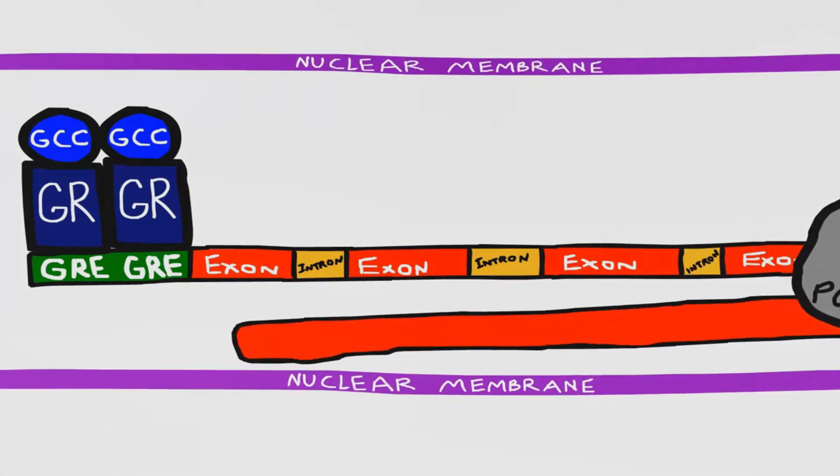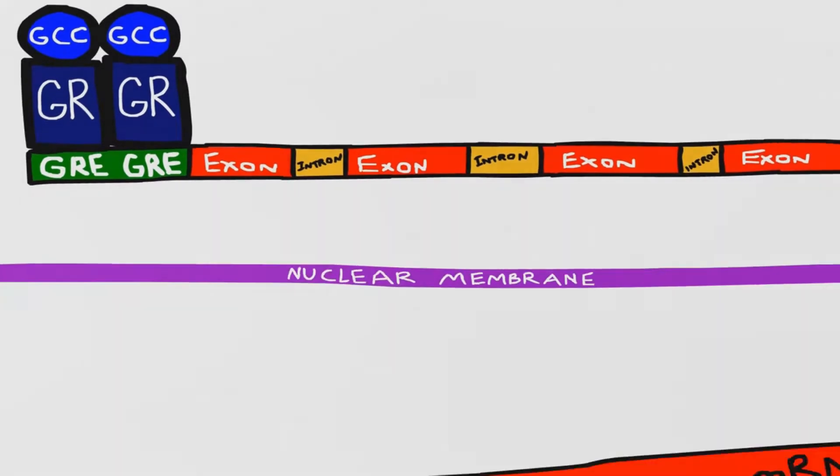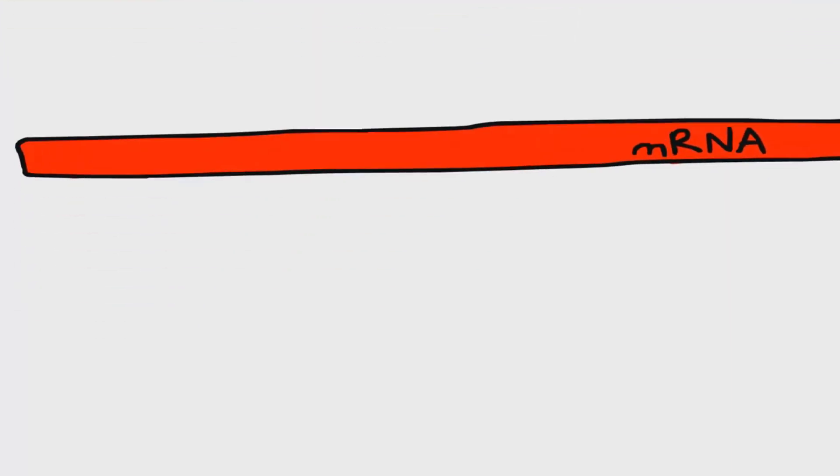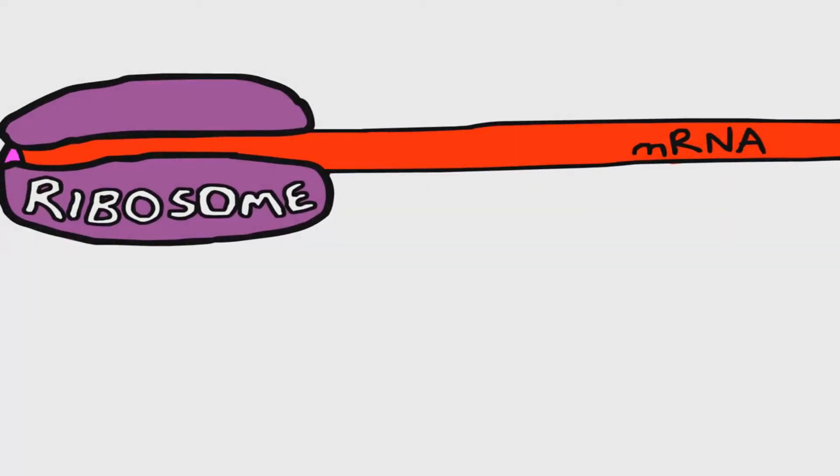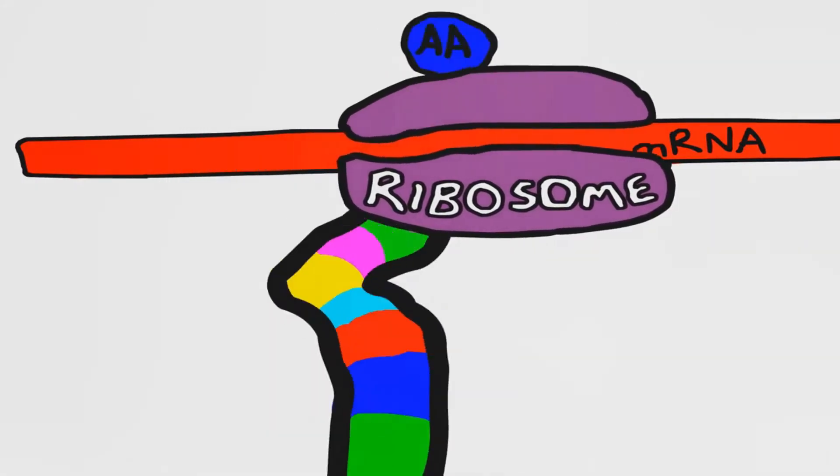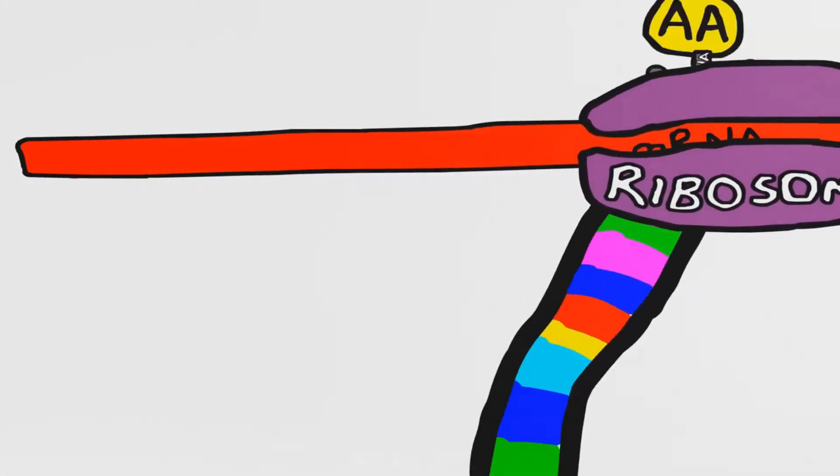This happens in the nucleus and then the messenger RNA leaves the nucleus to interact with a ribosome, which then produces a polypeptide chain. After some post-translational modification, this is going to produce some sort of a protein.